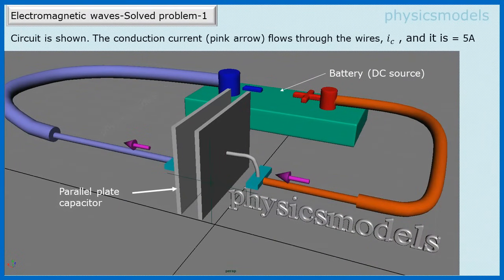We now look at the circuit that's shown here. There is a battery. The positive terminal of the battery is connected to one plate of the capacitor. The other plate of the capacitor is connected to the negative terminal of the battery.